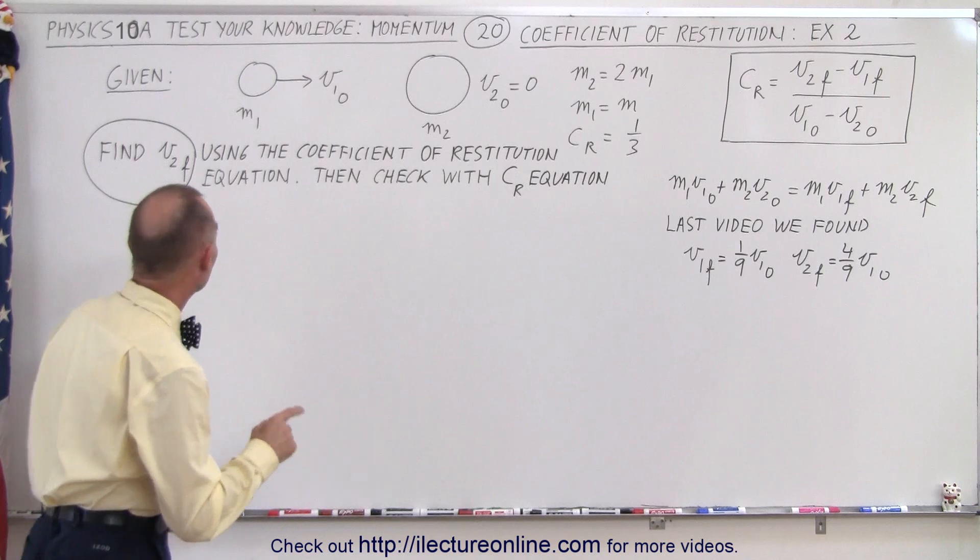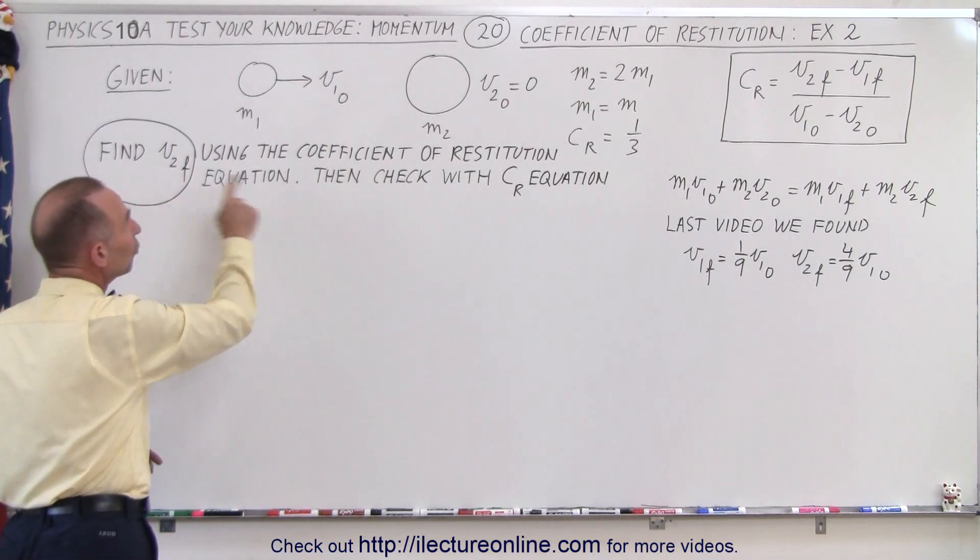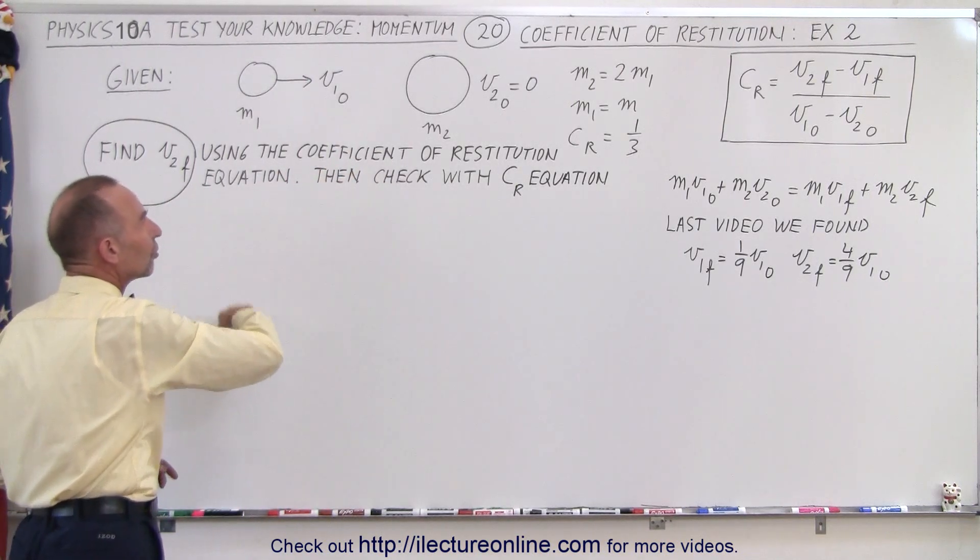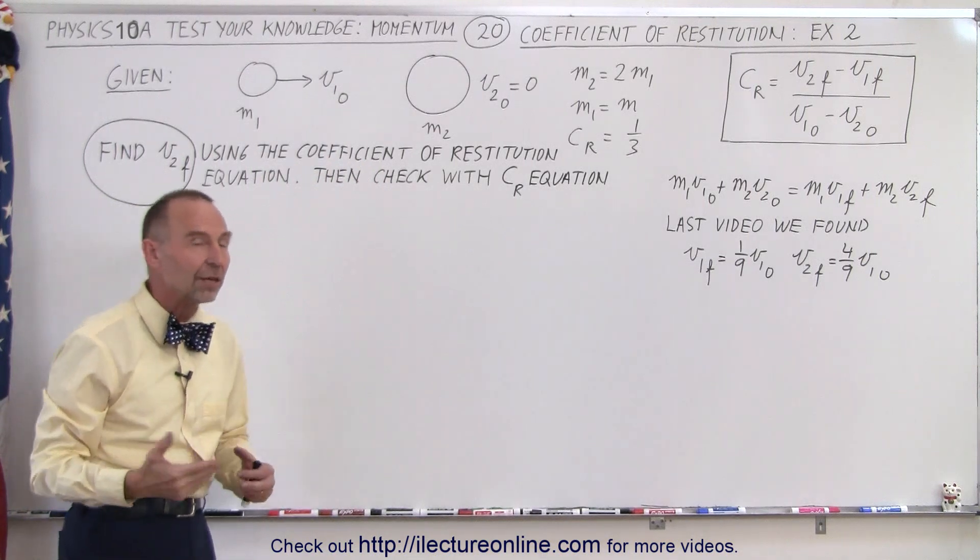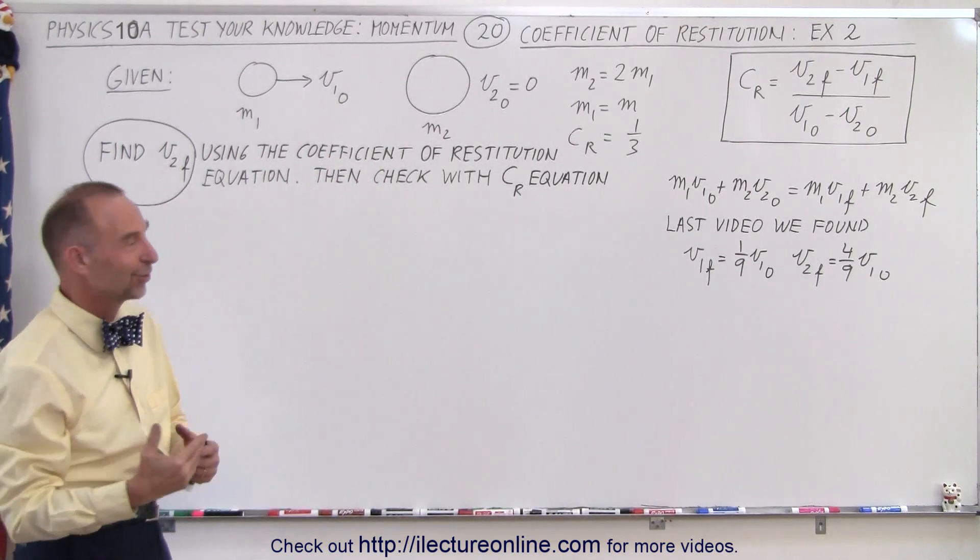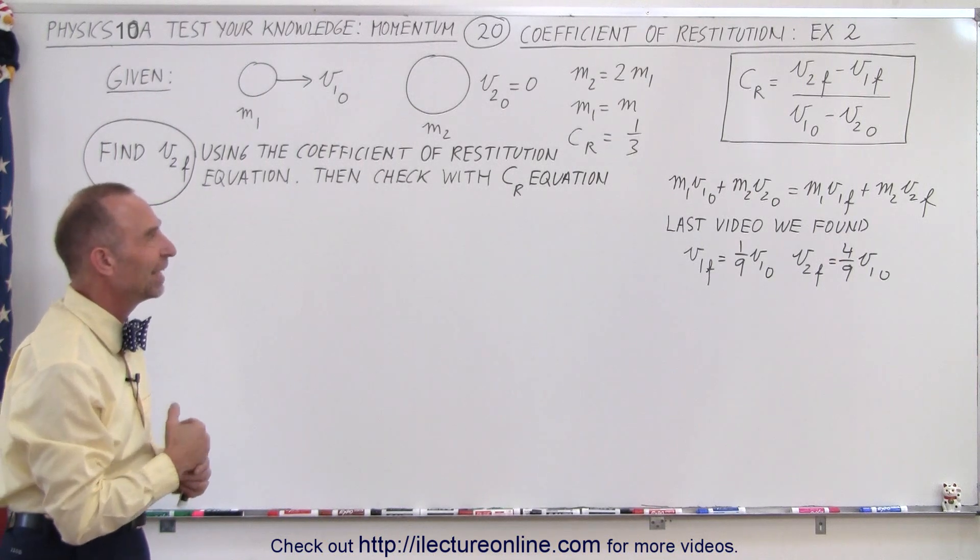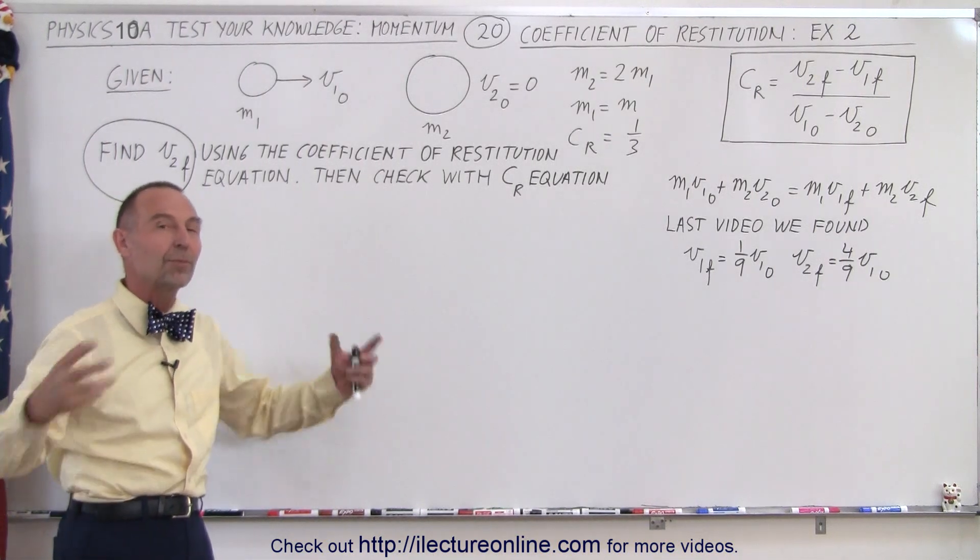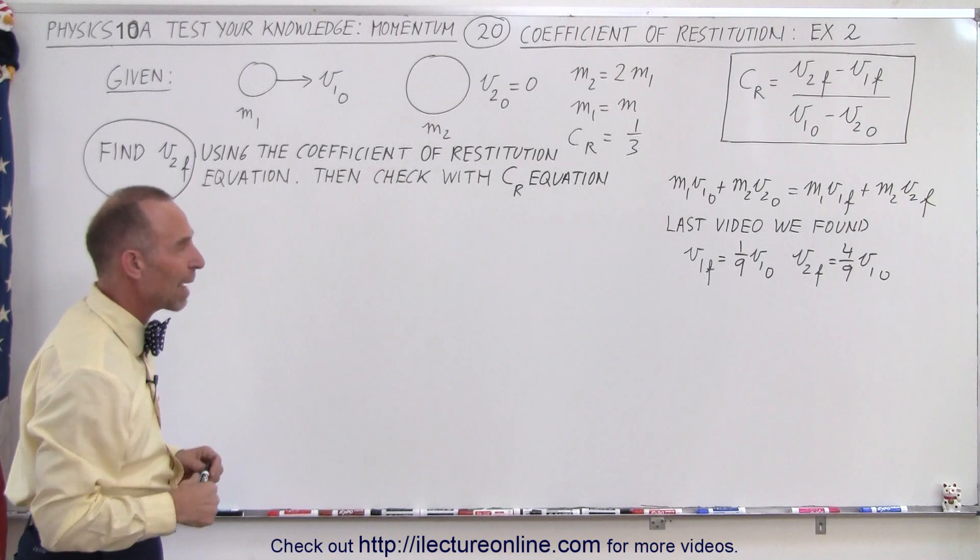What we're going to do here is find v2 final using the coefficient of restitution equation, and then check to see if the coefficient of restitution indeed is one-third when we plug all the values for the velocities back in.